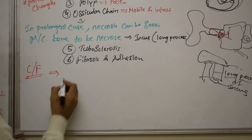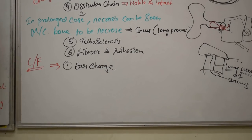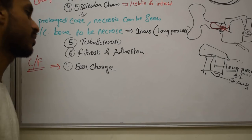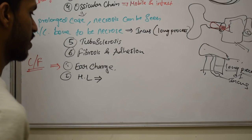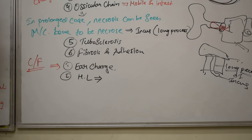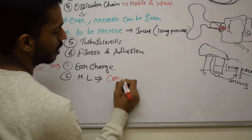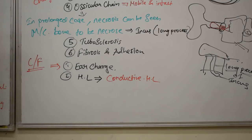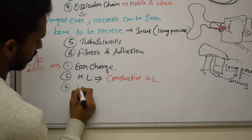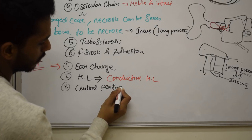In tubotympanic type, we will see ear discharge which is profuse, mucoid, and odorless. We will also see hearing loss — on audiometry examination, it will be a conductive type of hearing loss. We will see central perforation, which can be small, subtotal, or complete. The middle ear mucosa will be edematous and red.